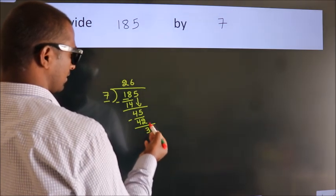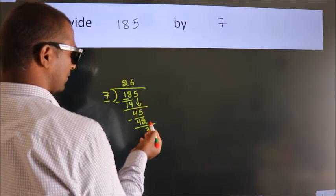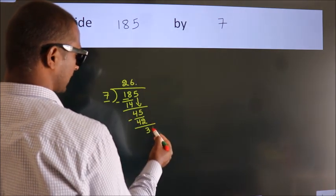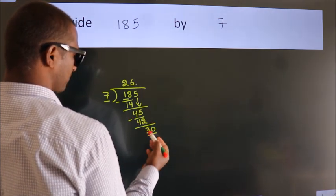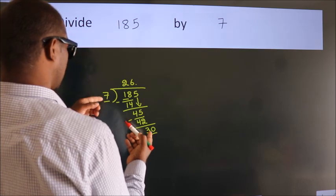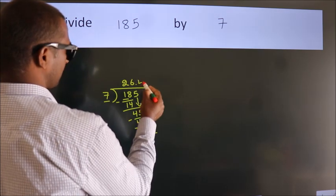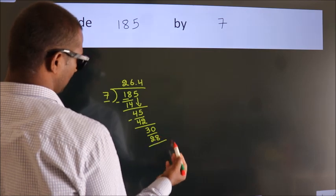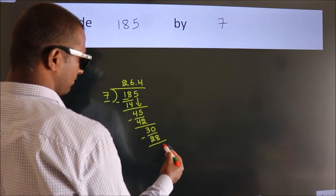After this, no more numbers to bring down, so what we do is put a dot and take 0, giving us 30. A number close to 30 in the 7 table is 7 times 4, which is 28. Now we subtract. We get 2.